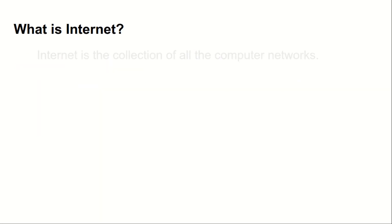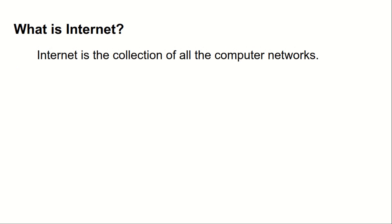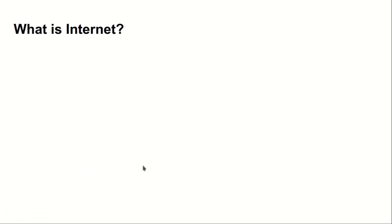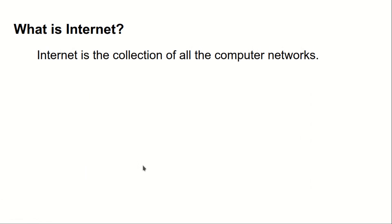After that, let's move to the definition of internet. The internet is the collection of all the computer networks. So previously we saw that a computer network is the collection of all the computers, and the internet is a collection of all the computer networks. Let's give an example of this.